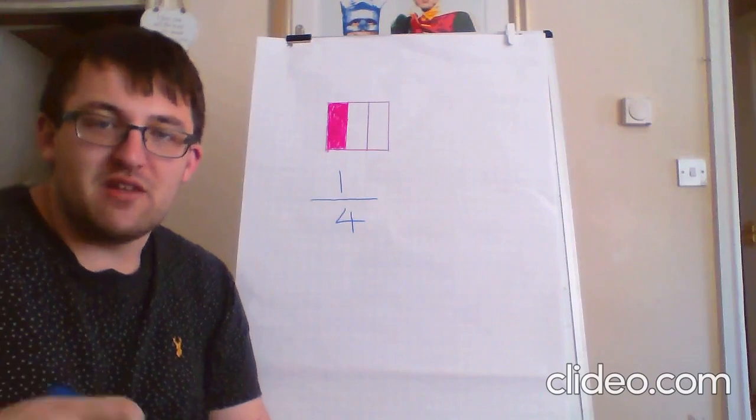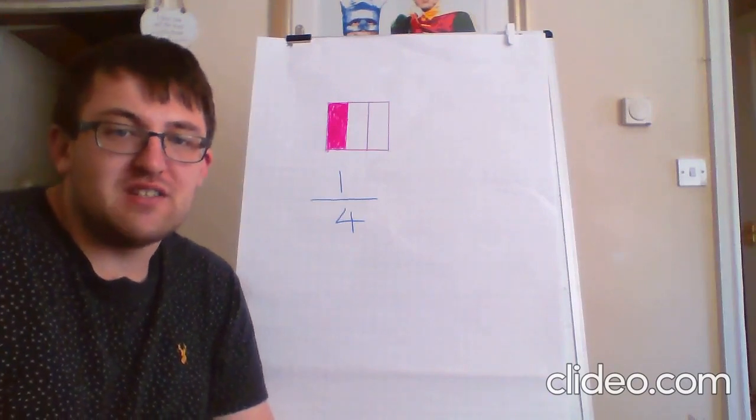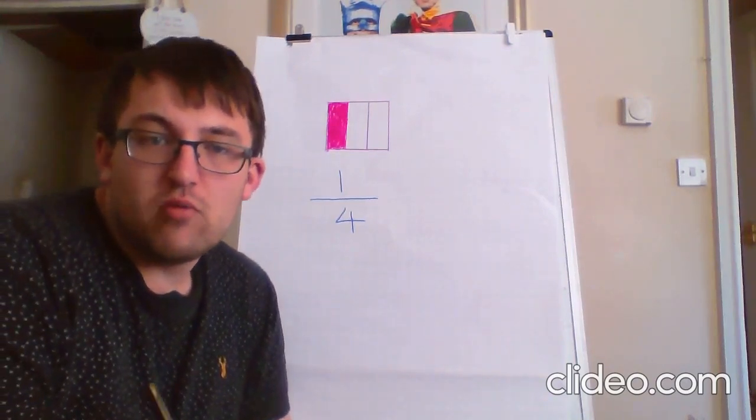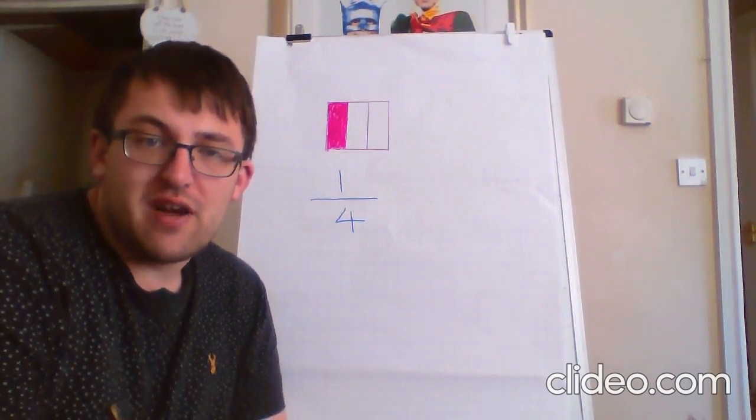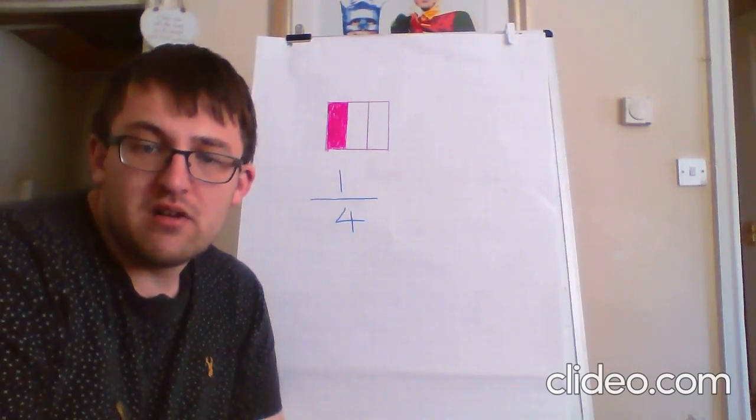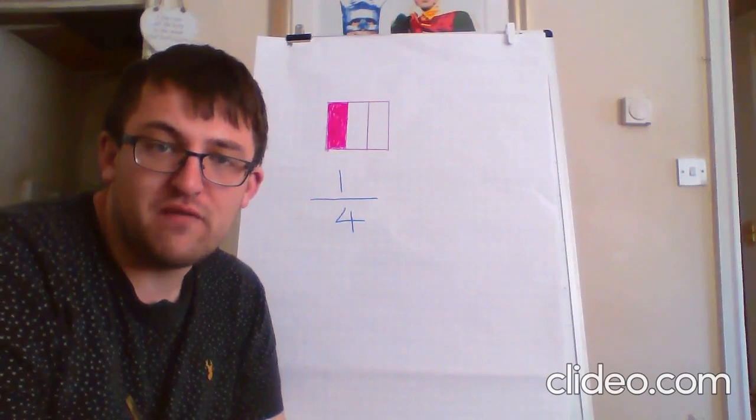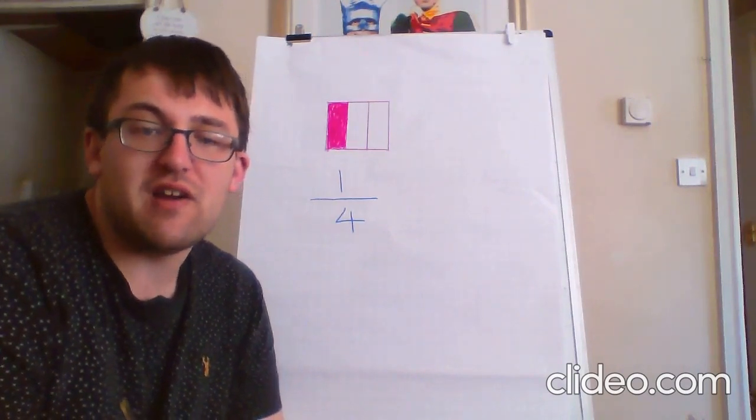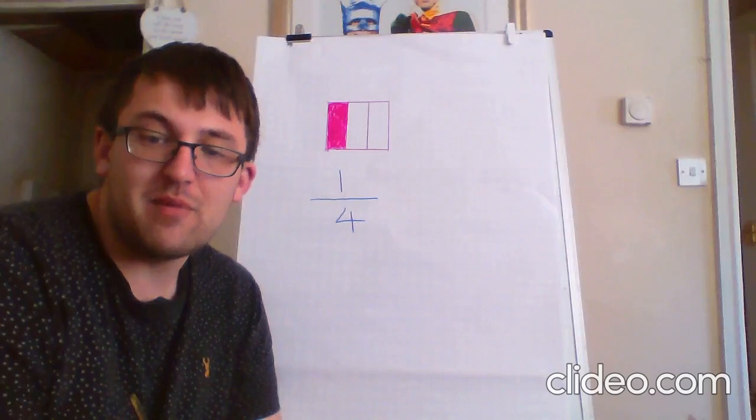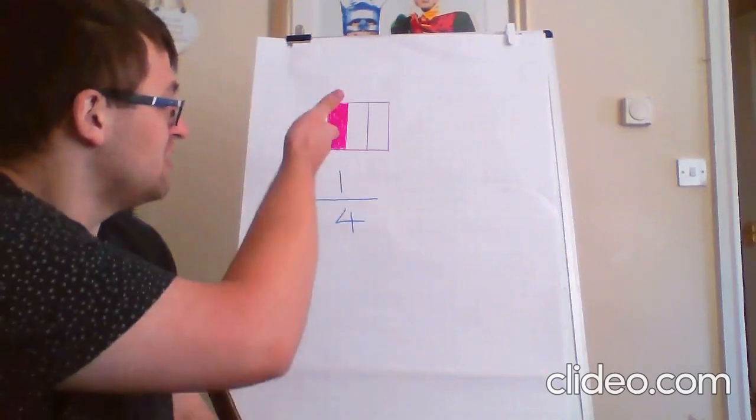So, let's have a look at the first style of question on our sheet. It says, what fraction of each diagram is yellow? Well, if we want to figure out the fraction, the first thing we need to do is figure out how many parts there are in total, and then how many parts are shaded in. So, I've done one on the board.